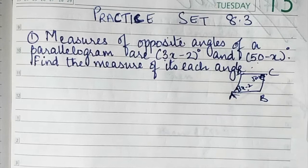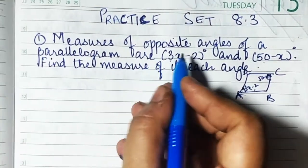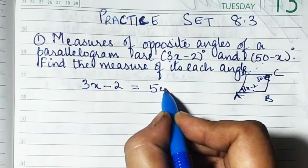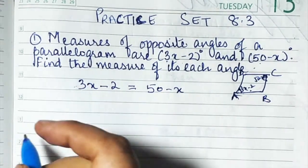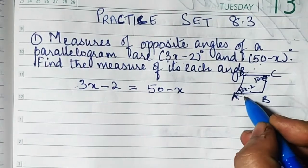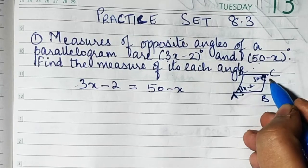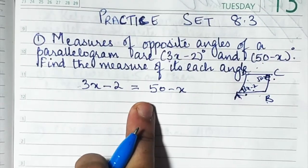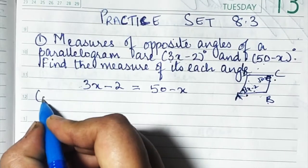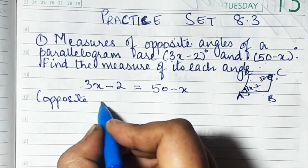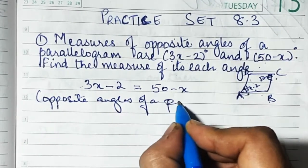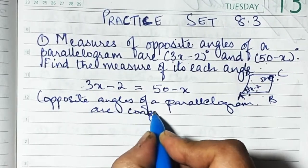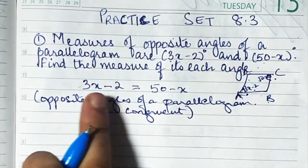Since they are opposite angles, they are going to be congruent because the property says opposite angles of a parallelogram are congruent. So 3x minus 2 is equal to 50 minus x, because opposite angles are congruent. We'll solve this to find the value of x, then the value of angle A and angle C, and then find angles B and D.